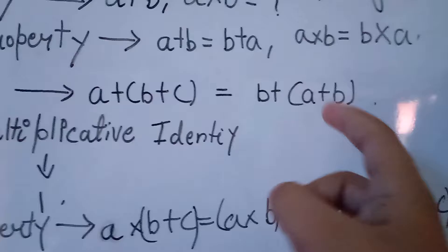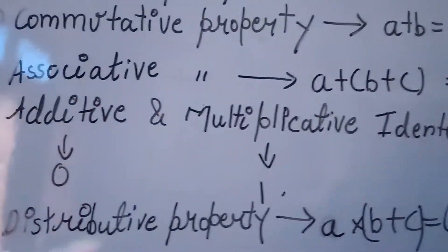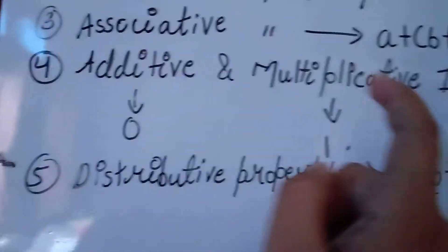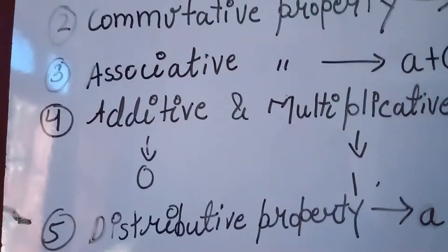This means additive and multiplicative identity. Additive identity is 0 and multiplicative identity is 1. Additive identity is 0 means that if we add 1 to 0,